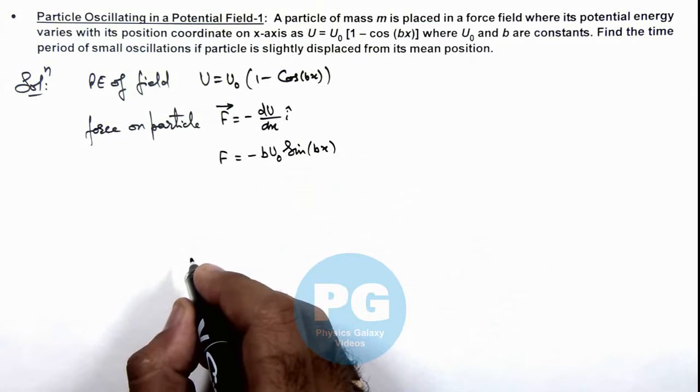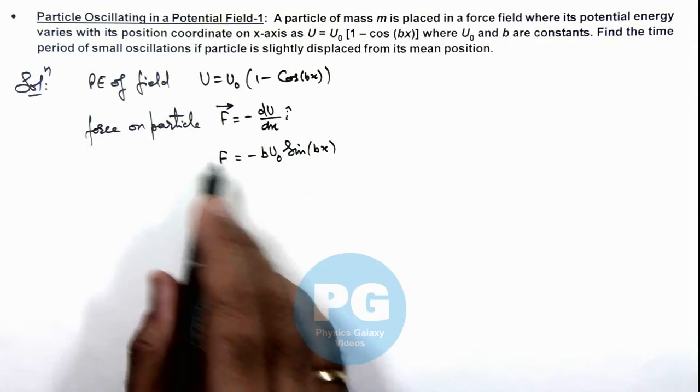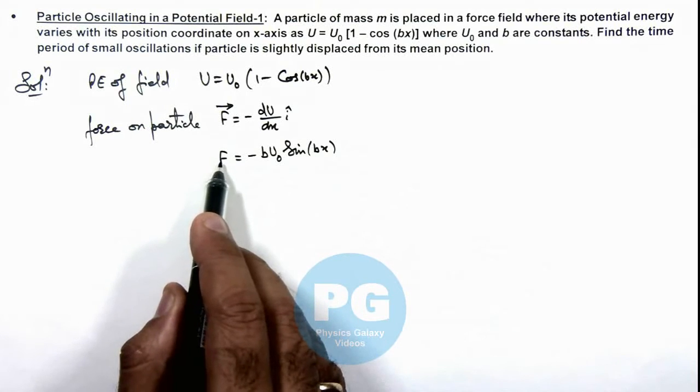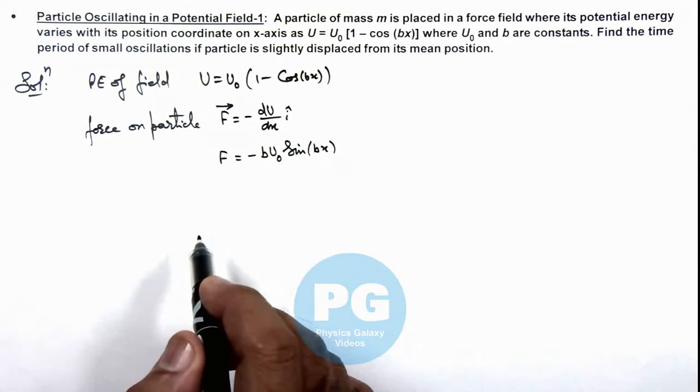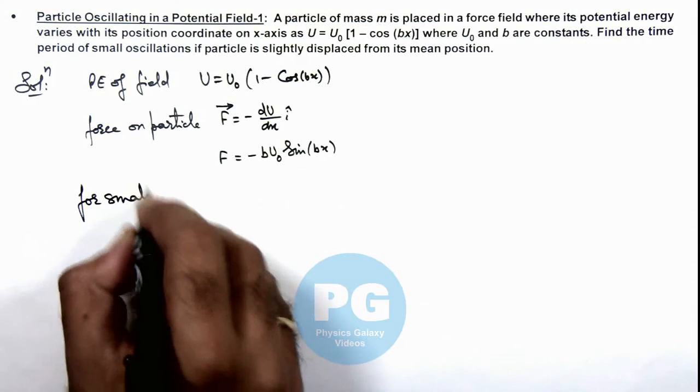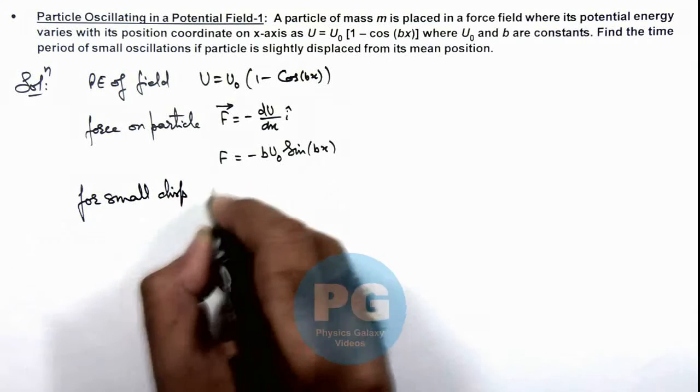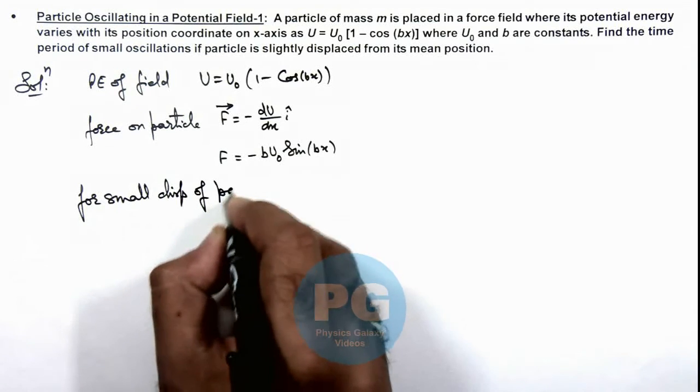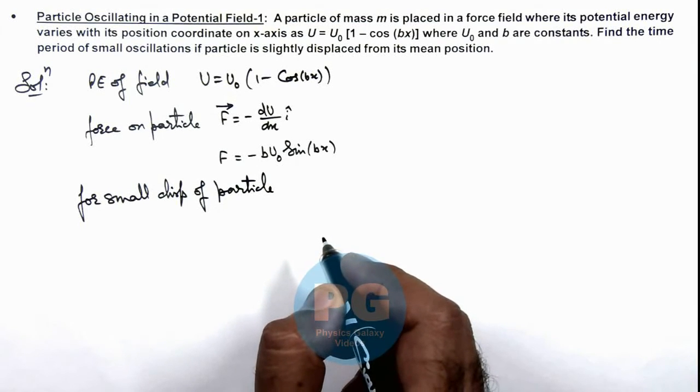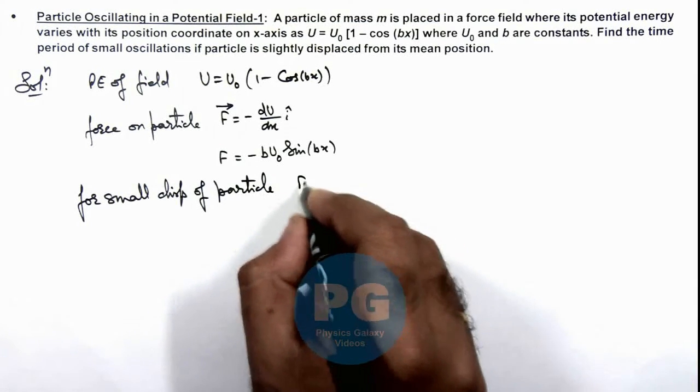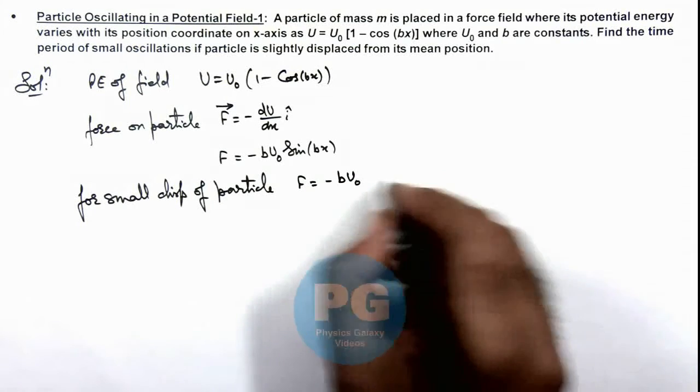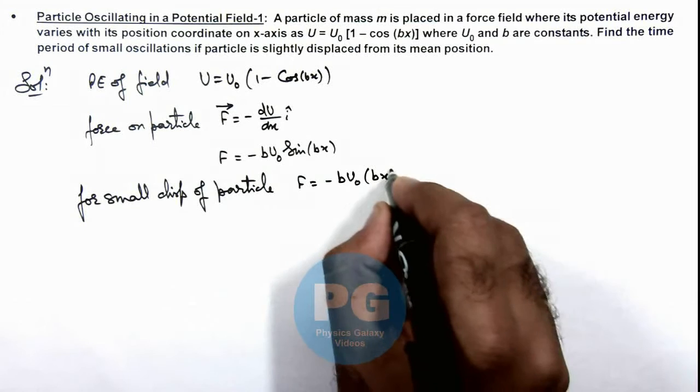In this situation here we can see, I am not using the vector symbol because I know the value of force would be opposite to the displacement. So we can write here for small displacement of particle, F is equal to minus bU₀, and sine bx can only be written as bx as